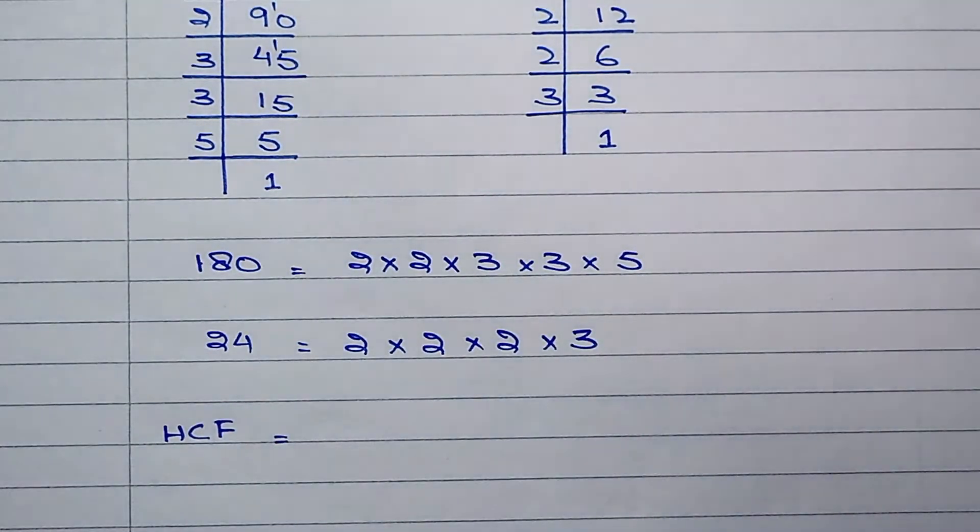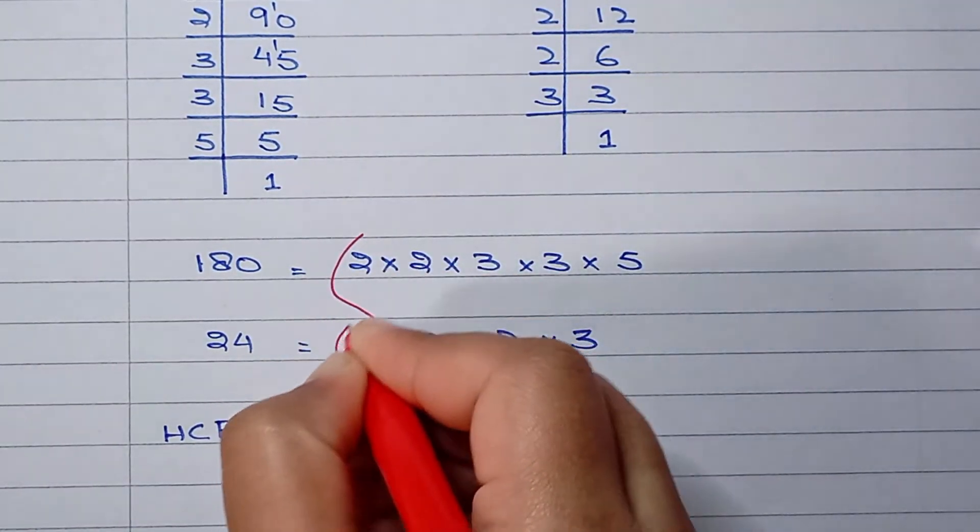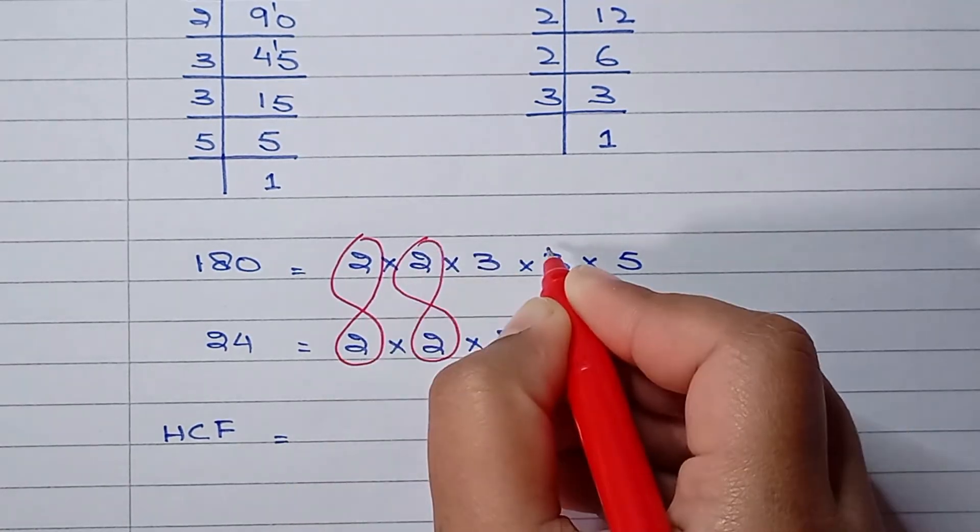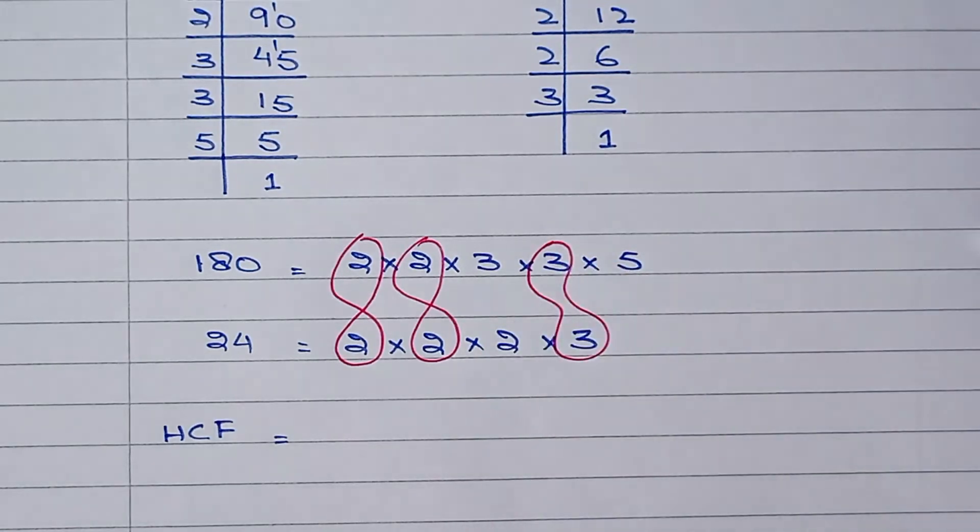As you can see, we have 2 as a common factor, this 2 is a common factor, and the number 3 is a common factor.